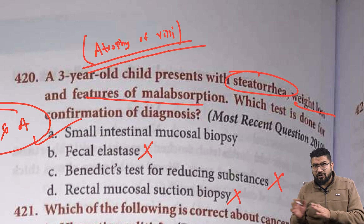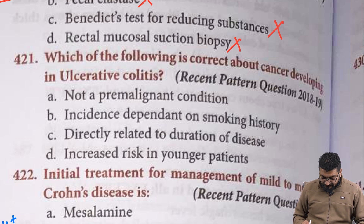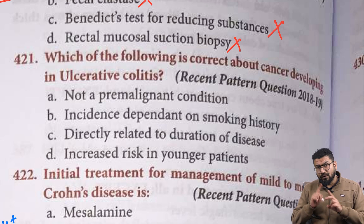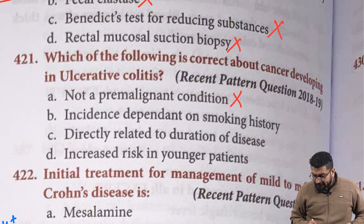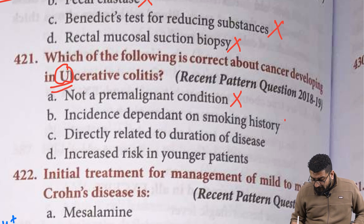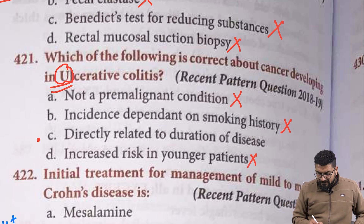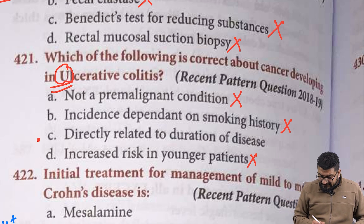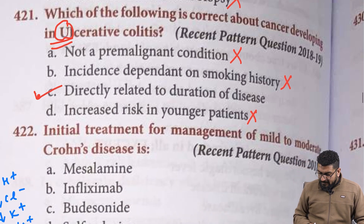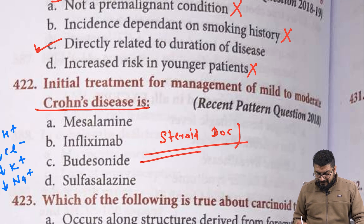Regarding cancer development in ulcerative colitis: both UC and Crohn's are pre-malignant. Smoking is actually protective in UC, so incidence does not depend on smoking history. Cancer risk is directly related to duration of disease — more disease duration means higher risk. It generally affects middle-aged to older patients. For mild to moderate Crohn's disease, the drug of choice is steroids — specifically budesonide from the given options.